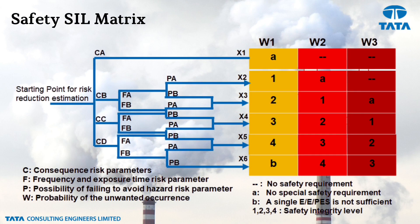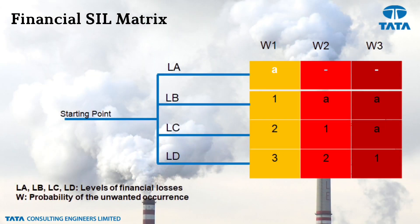For determining safety SIL, a matrix is used with four parameters: C (consequence risk parameter), F (frequency and exposure time risk parameter), P (probability of failing to avoid the hazard), and W (probability of the unwanted occurrence). Based on the inputs for each loop, the SIL level is determined using this matrix.